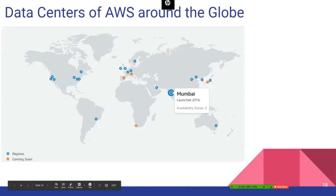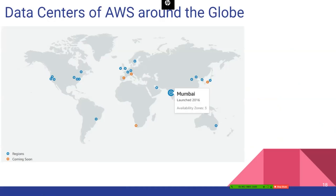AWS has many data centers around the world — for example, Mumbai, India was launched in 2016. Each region has availability zones — Mumbai has three zones. If something goes wrong in one Mumbai zone, the data is automatically taken from the other two zones. This is how high availability is achieved through availability zones.